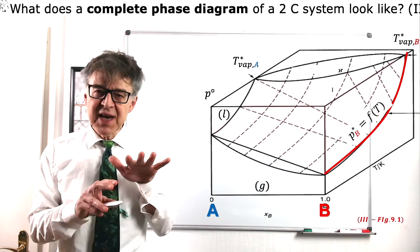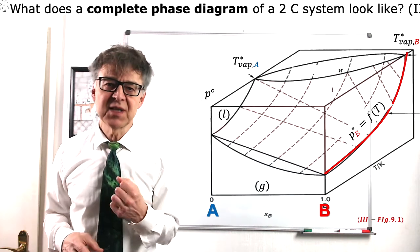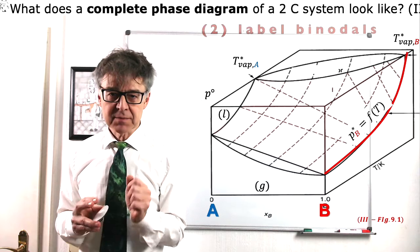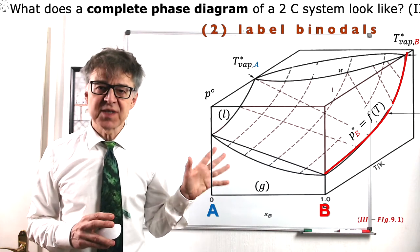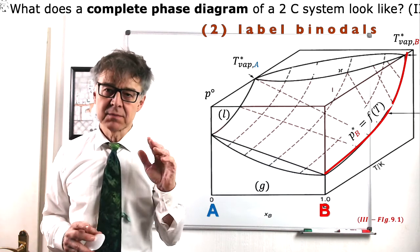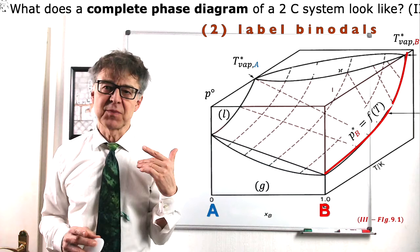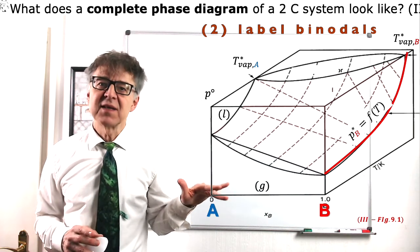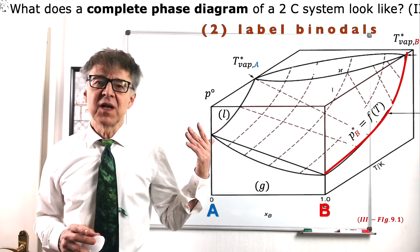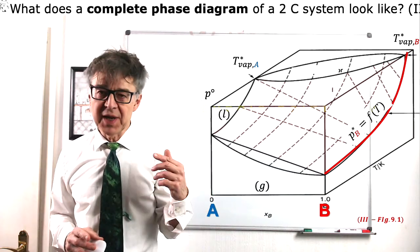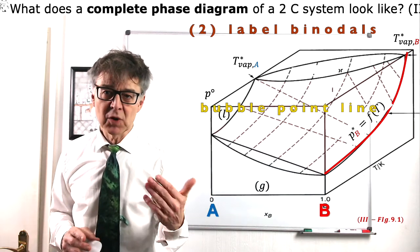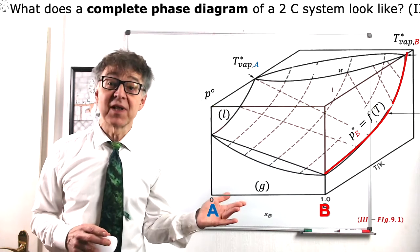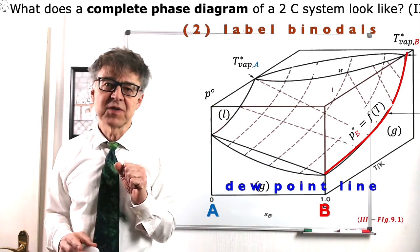The dividing lines or dividing surfaces between homogeneous and heterogeneous regions are called binodals. In this diagram, we see two binodals, binodal surfaces to be exact. The two-phase region liquid-gas is separated from the liquid phase region by the boiling point line, or rather surface, and it is separated from the gaseous region by the dew point line, or rather dew point surface.